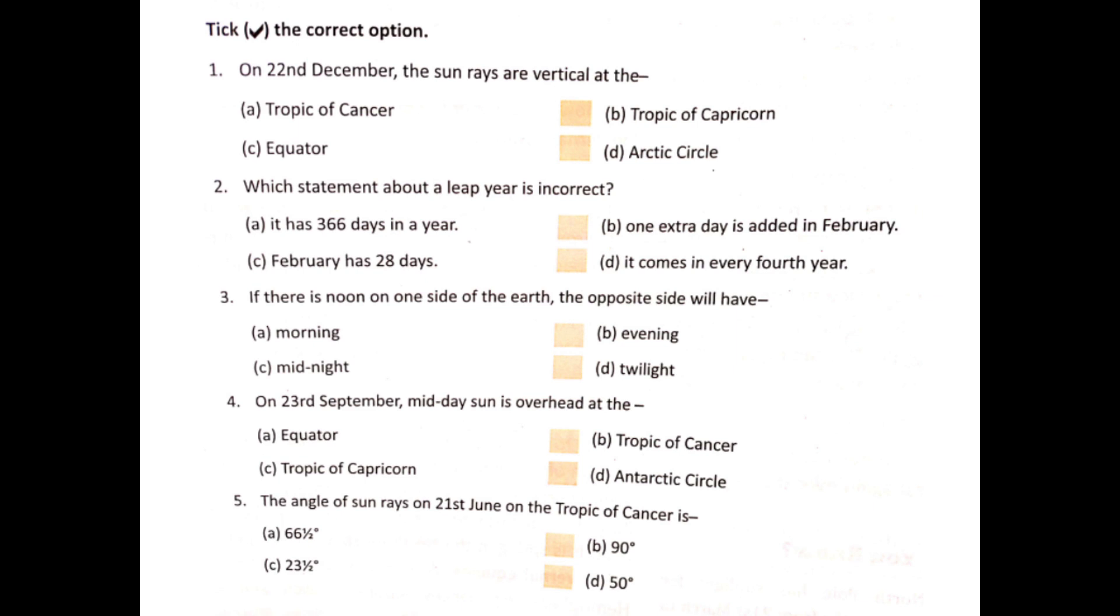Question 1: On 22nd December, the sun rays are vertical at Tropic of Cancer, Tropic of Capricorn, Equator, or Arctic Circle. Now, the right answer is Tropic of Capricorn.